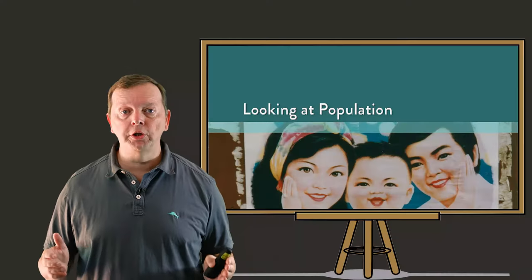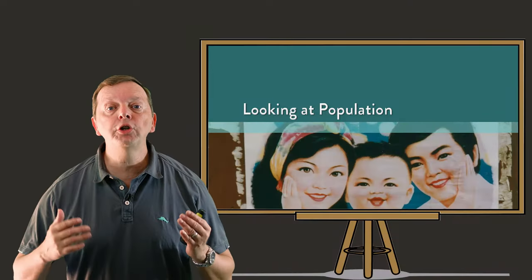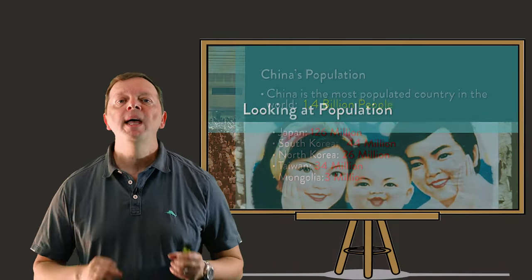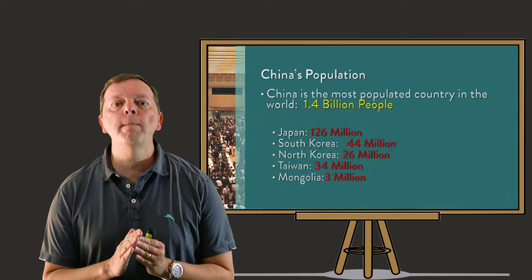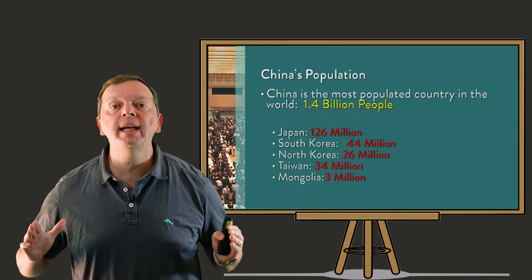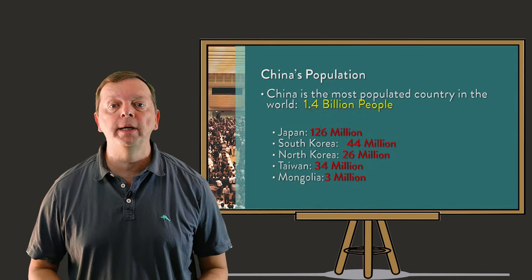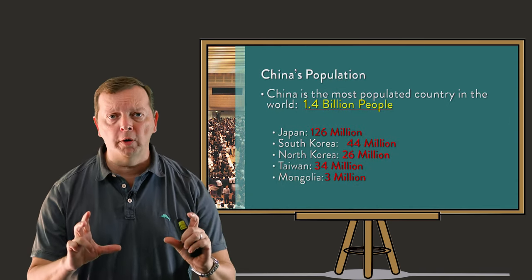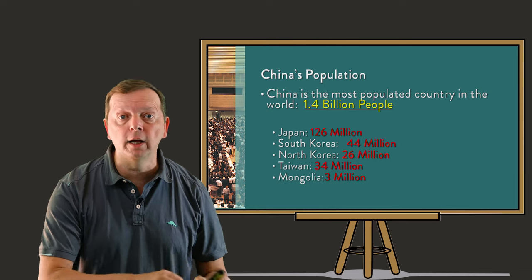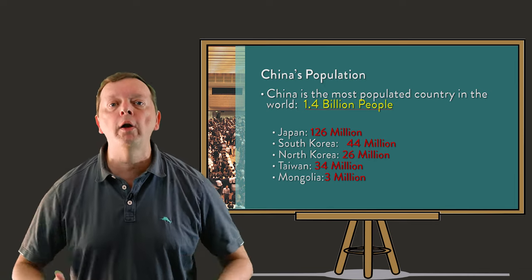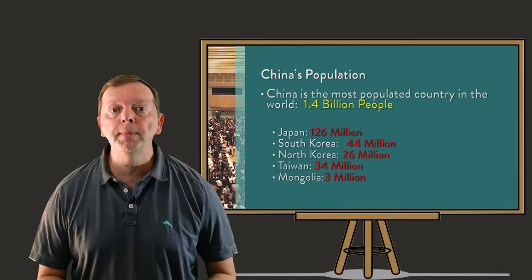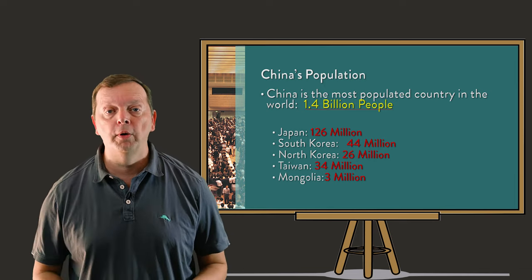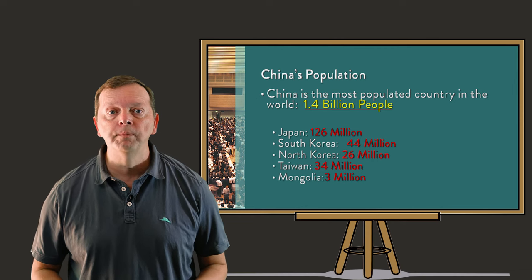Let's start by looking at the population of the region. In China, there are lots of people. At 1.4 billion, China is the most populated country in the world. That's 100 million more than India, which is number two, and over 100 million more than the United States, which is number three in the world.